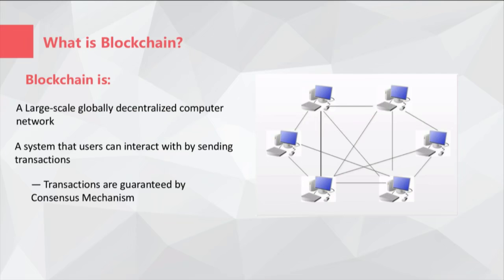Blockchain is a large-scale globally distributed computer network, and users can interact with it by sending transactions. Each transaction is a message with cryptographic properties, and the order of transaction processing is enforced by a mechanism called global consensus.